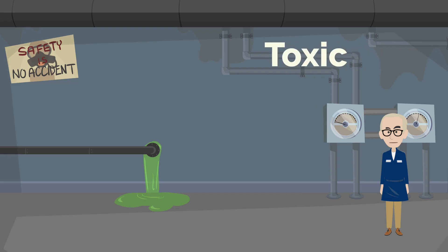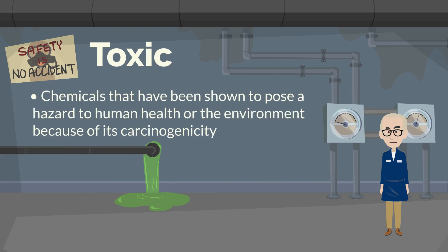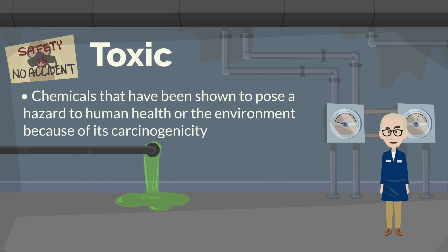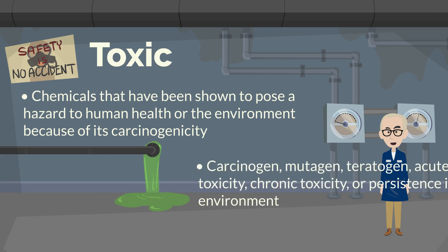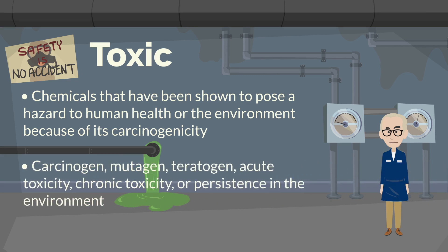Toxic. These are chemicals that have been shown to pose a hazard to human health or the environment because of their carcinogenicity — such as carcinogens, mutagens, teratogens — acute toxicity, chronic toxicity, or persistence in the environment.